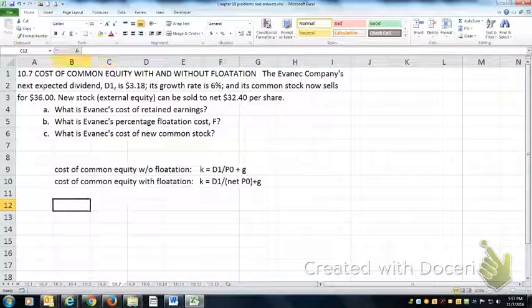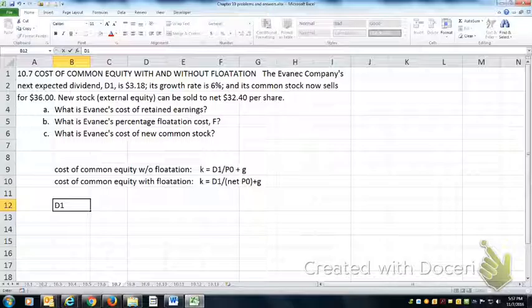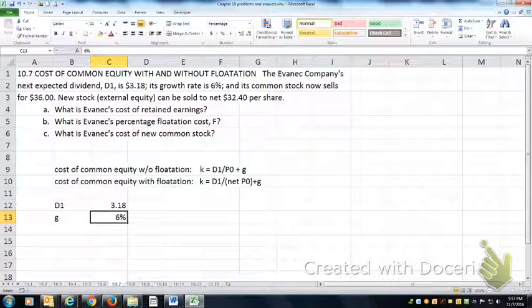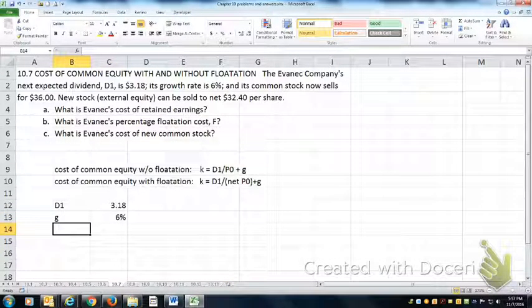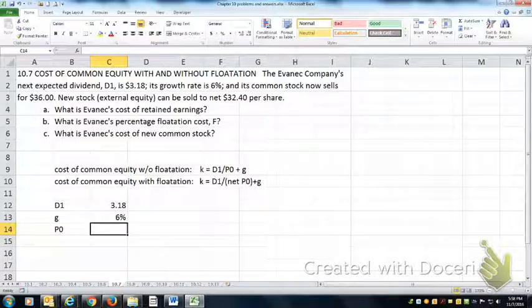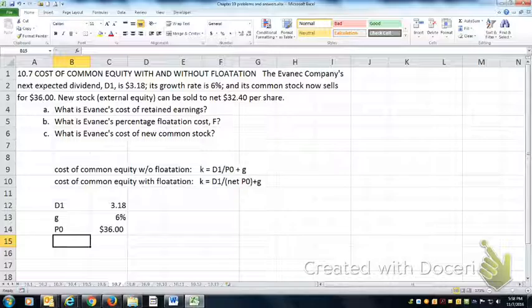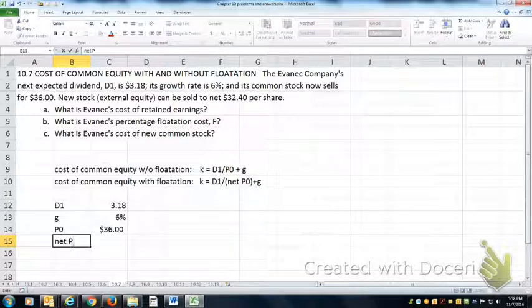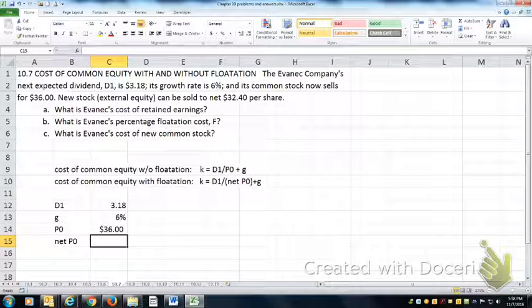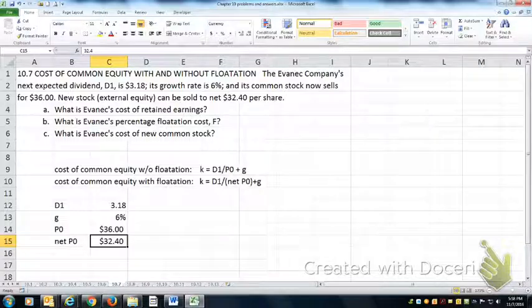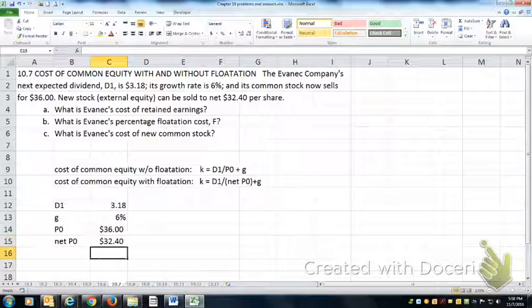Writing down what we have: D1 is $3.18, G is 6%, P0 is $36, and net P0, that is after paying the flotation cost, the net retained from the company is $32.40.